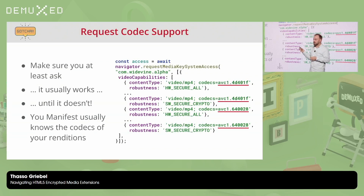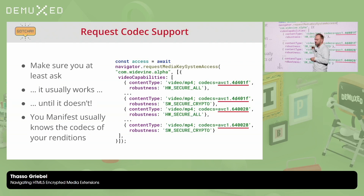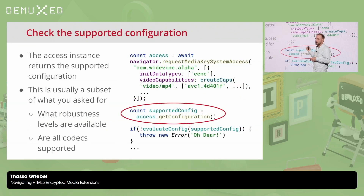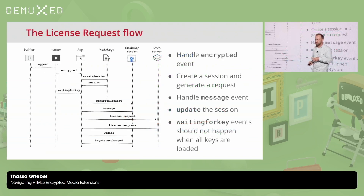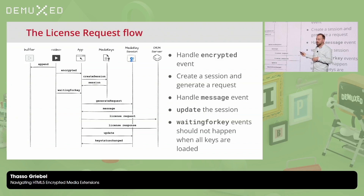Similarly for codecs — get them from your manifest, and if you can be precise, be precise to get the best possible result. From there, check your configuration: once you have your access, call getConfiguration and check what you got. You should handle mismatches gracefully rather than just throwing an error — decide maybe not to play certain renditions. In terms of the license flow: append data to your video element, get an encrypted event, create your session, generate your license request, handle messages, feed the license back via an update, and you're good to go.